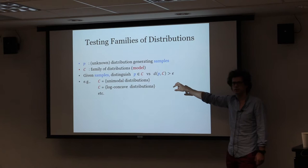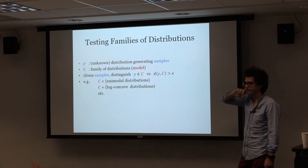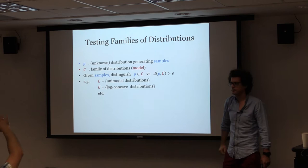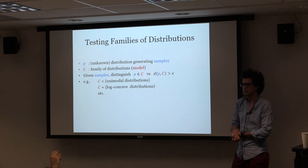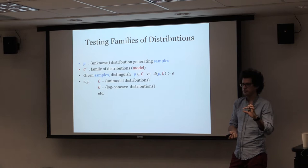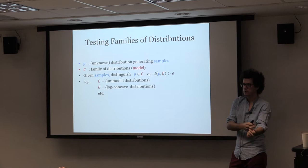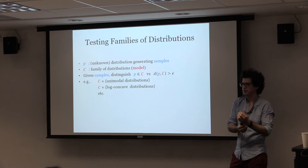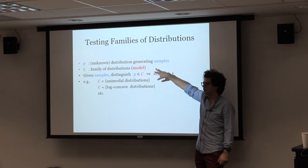If something is far from a unimodal distribution — I have to define the distance. Think of a mountain as a unimodal distribution, and I'm thinking of a mountain with a little peak here. That's not a unimodal distribution. But if a little mountain is very small, this distribution is still going to be close to a unimodal distribution. If the mountain starts getting high, then you're far. It really depends on your choice of distance whether this problem is interesting to you or not.